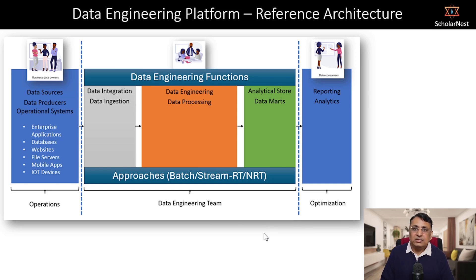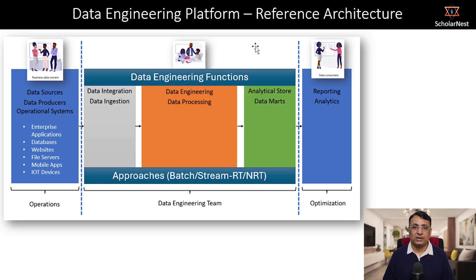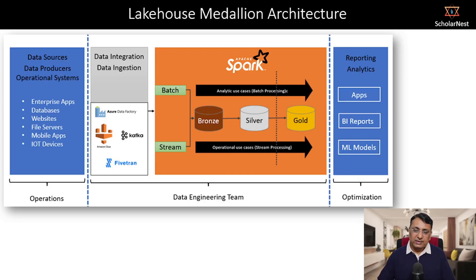Now we understand what data engineering is, where we fit in an enterprise, what we do, and the different functions and approaches. To implement all of this, we need an architecture or platform. Here is a diagram representing the modern data engineering platform architecture, also known as the lake house medallion architecture.